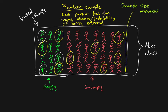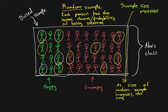The principle we can state is: as the size of a random sample increases, the representativeness of the sample also increases — or we could simply say the sample becomes more similar to the population.